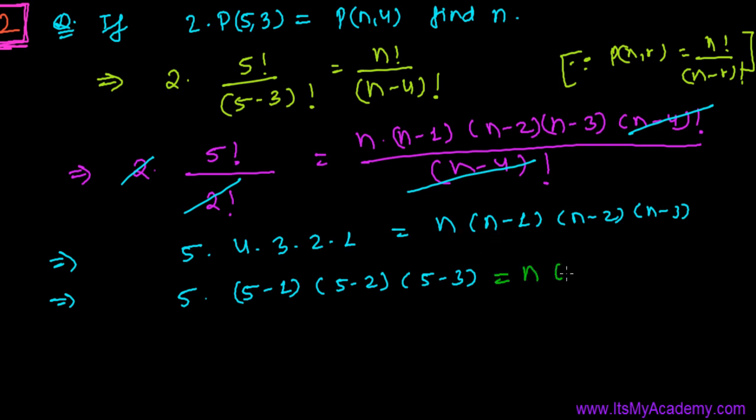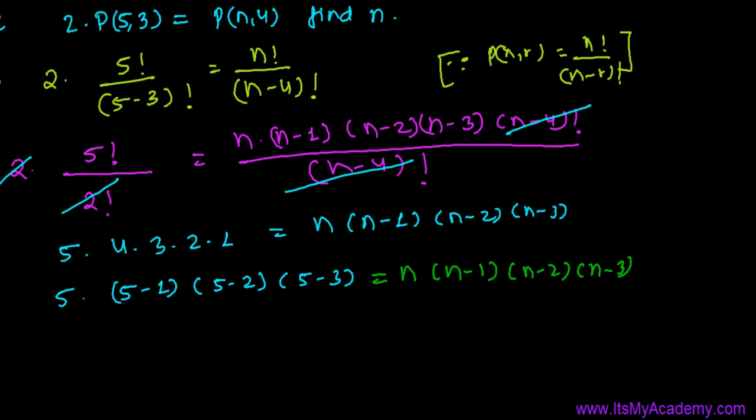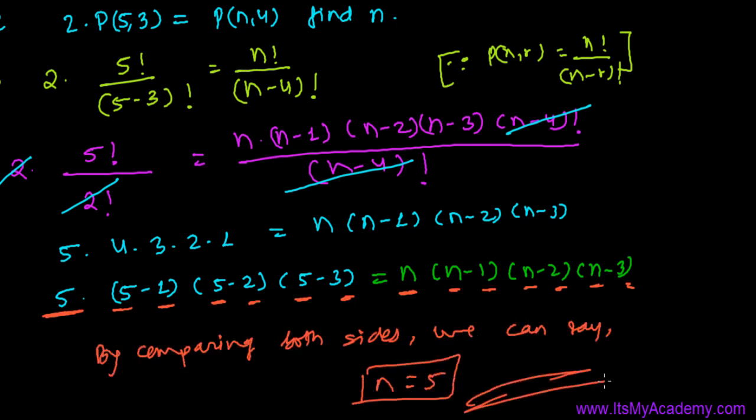I'm going to write now this n times n minus 1 times n minus 2 times n minus 3. And just compare. See, if 5 equals to n, then it's n minus 1, n minus 1. 5 minus 2, n minus 2. 5 minus 3, n minus 3. It means by comparing both sides, we can say n equals to 5. And that's our answer.